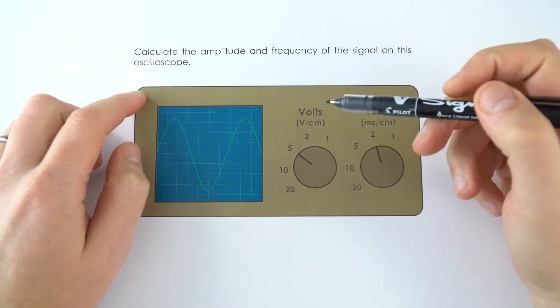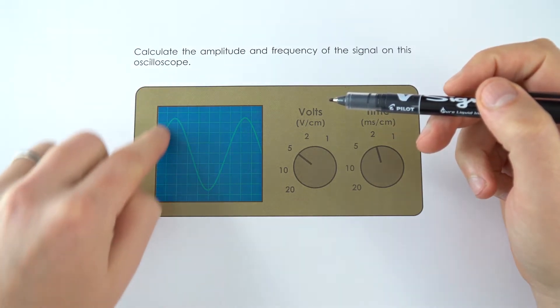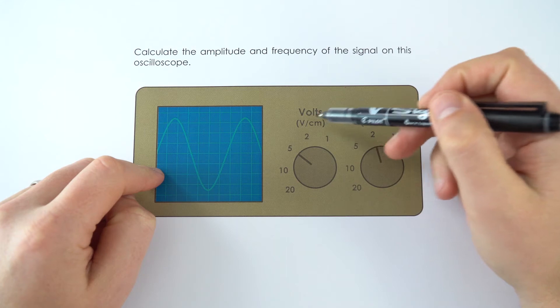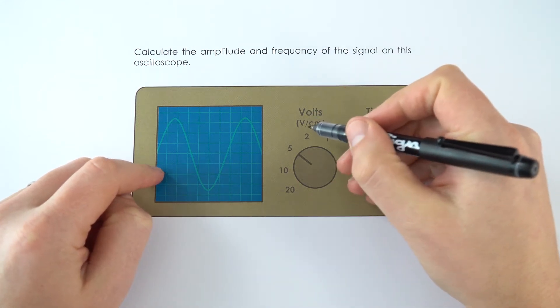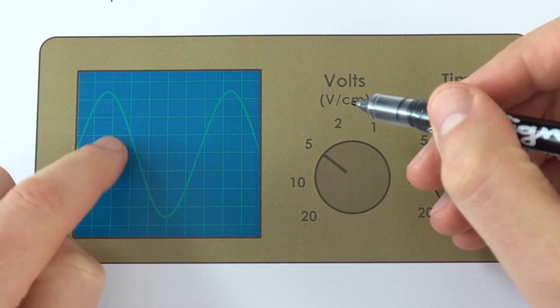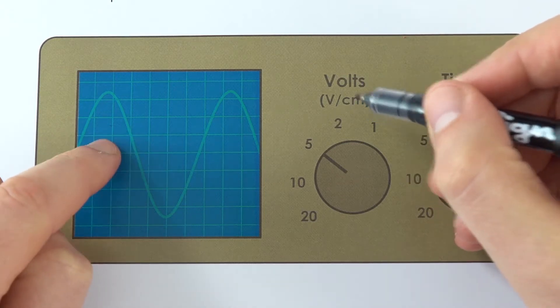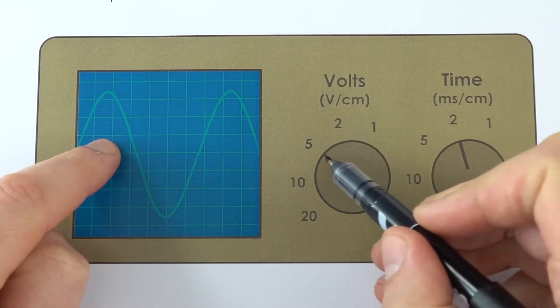The first thing we're going to look at is the amplitude, which is what we measure on the y-axis, and this is where we use the volts per division. Each centimeter, these are centimeter grid lines, each centimeter represents in this case five volts.